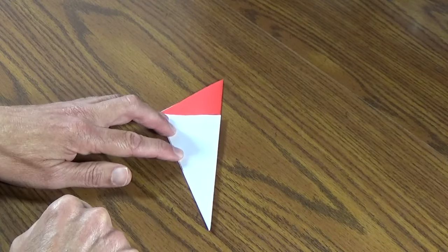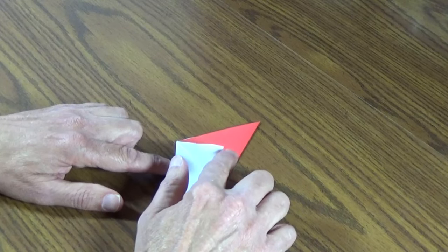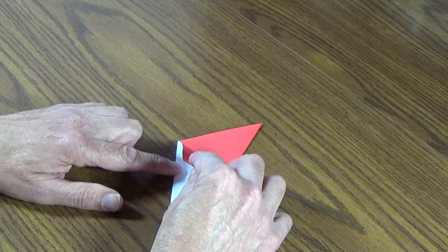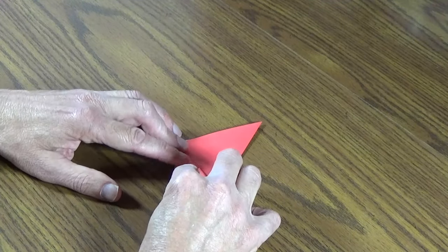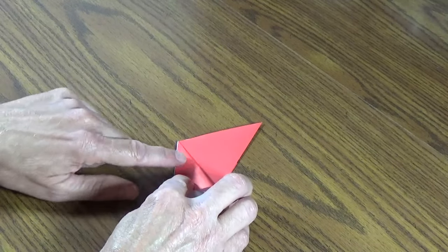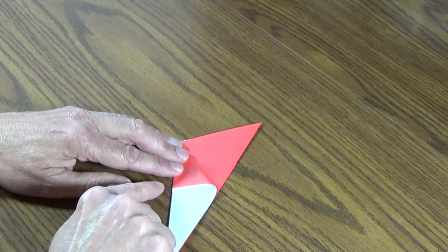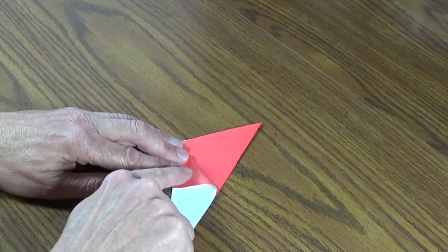Now from that last fold that we just made, take the point of this paper and fold it over to this edge. So you've got a straight line there and the point of that corner is now touching this edge.